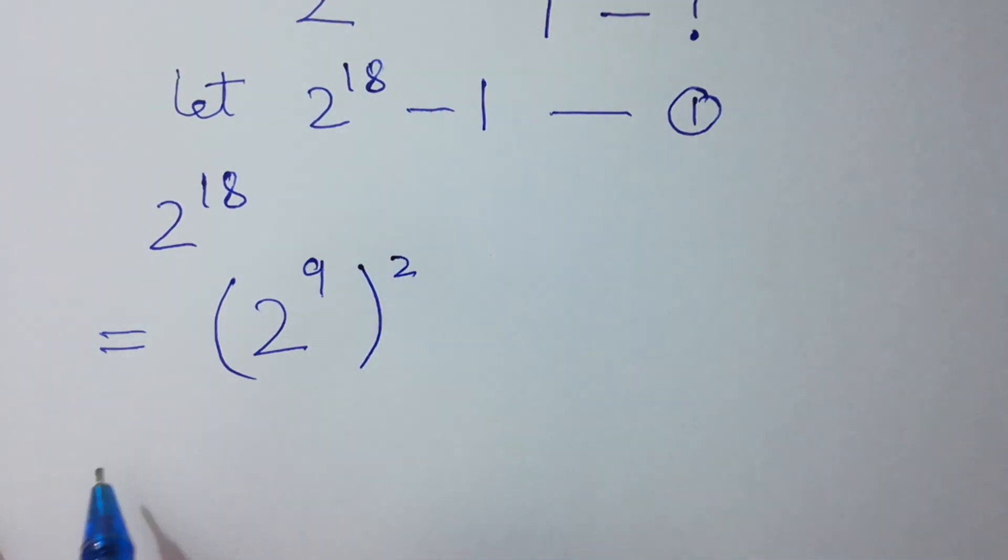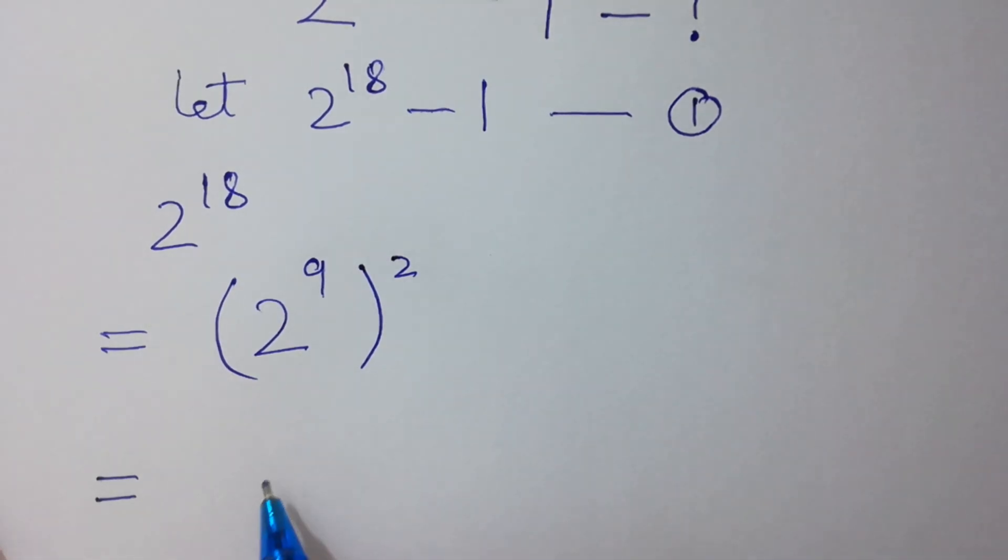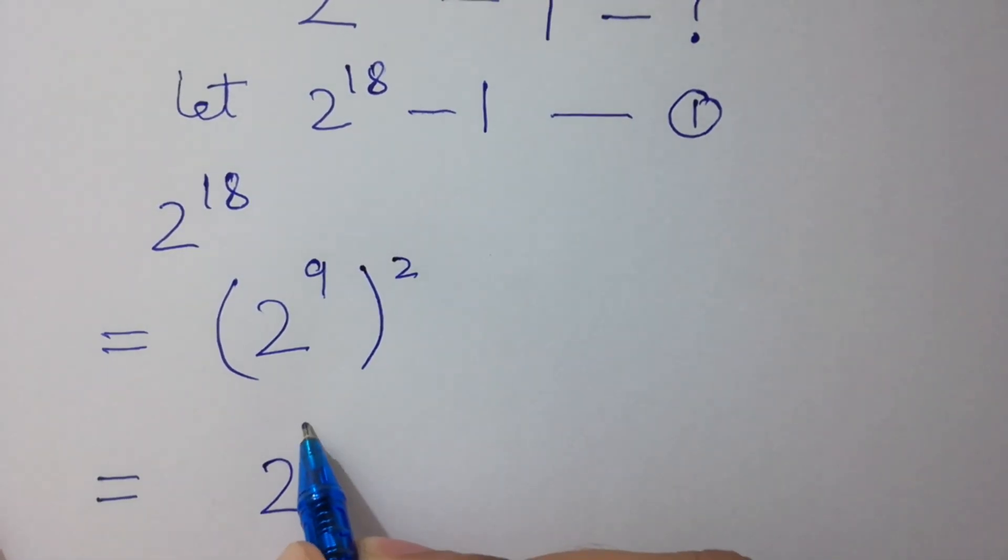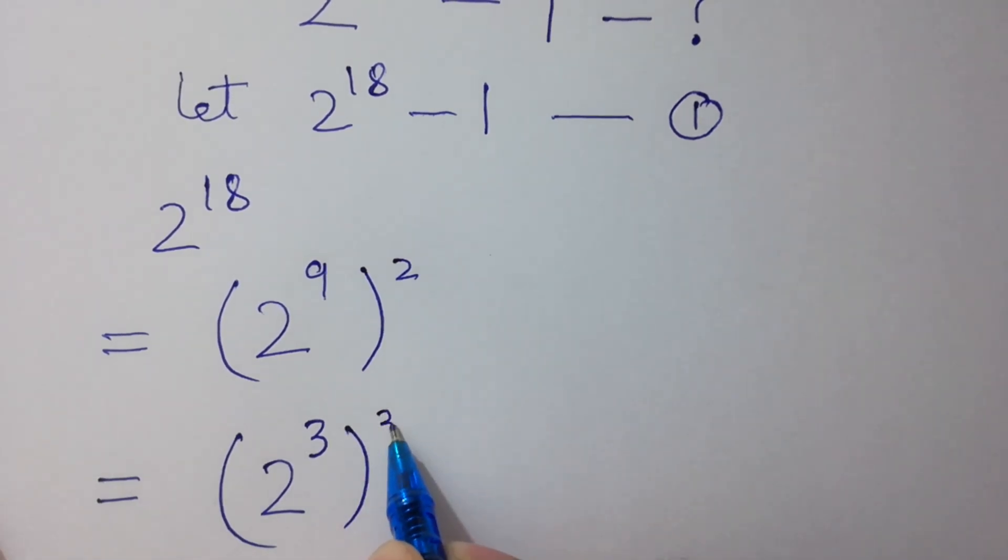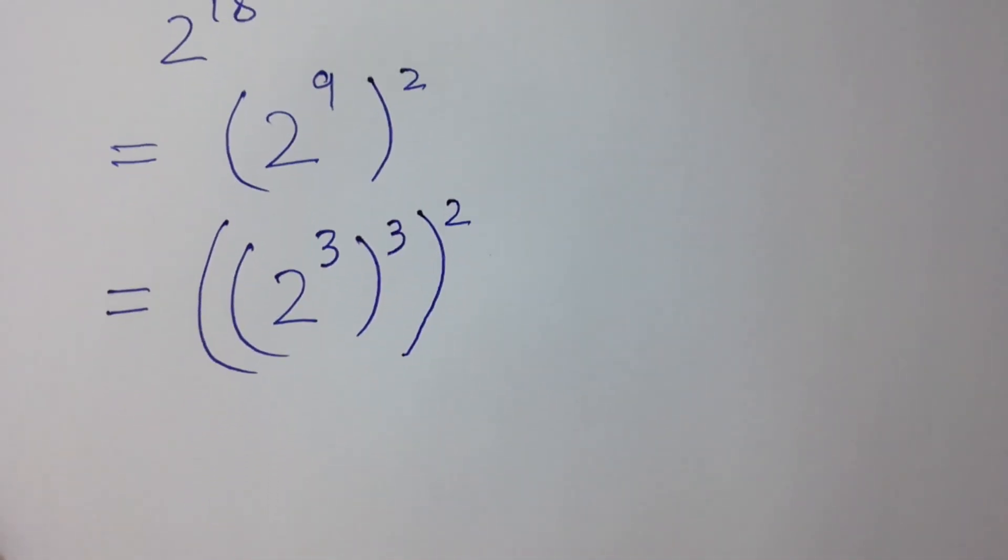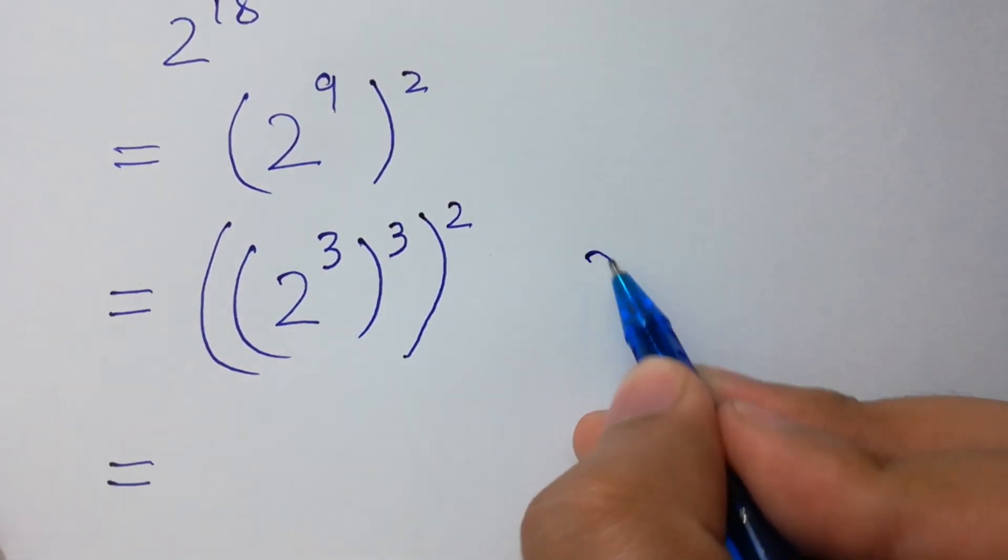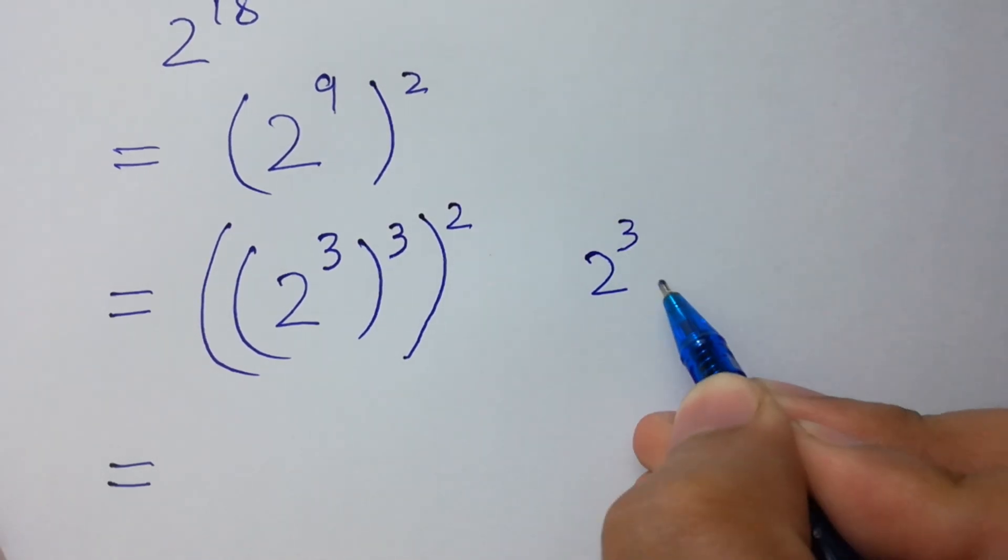And 2 to the power 9 equals 2 to the power 3, the whole cubed. Next step: since 2 cubed equals 8,